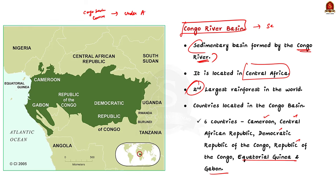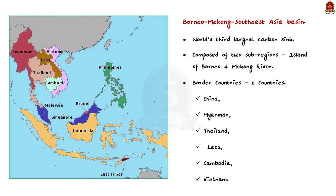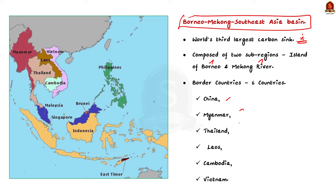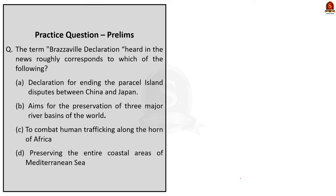The Borneo-Mekong Southeast Asia Basin is the world's third largest carbon sink, composed of two sub-regions: Borneo Island and the Mekong River. Geographically it has six countries: China, Myanmar, Thailand, Laos, Cambodia and Vietnam. Coming back to the question, the Brazzaville Declaration deals with the preservation of three major river basins of the world, so the correct option is B.